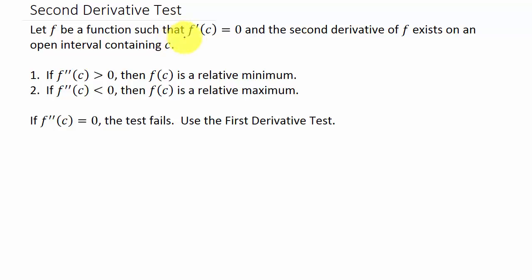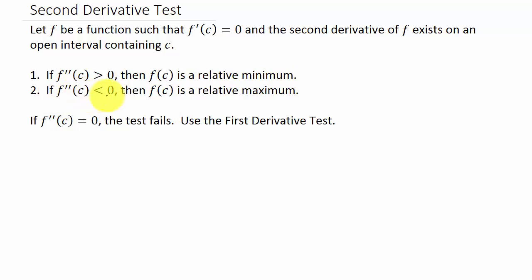So let f be a function such that f prime of c equals zero. We're going to find critical numbers, and the second derivative of f exists on an open interval containing c. If f double prime of c is greater than zero — so if we take the critical number, put it in the second derivative, and we get a positive number — then we have a relative minimum. If the second derivative evaluated at c is negative, then we have a relative maximum. And if f double prime of c equals zero, then the test fails, and we have to use the first derivative test.